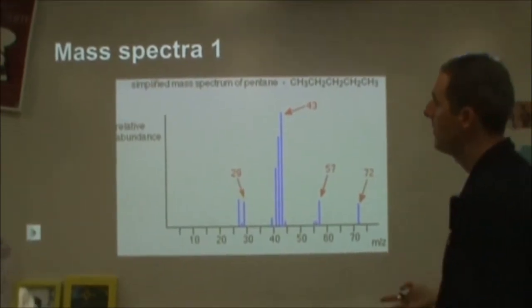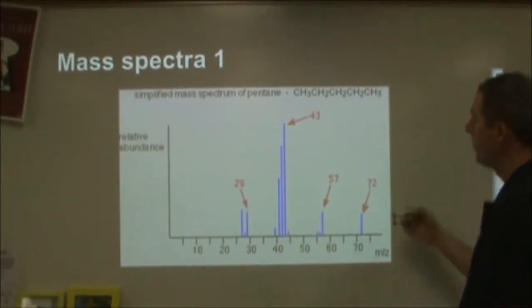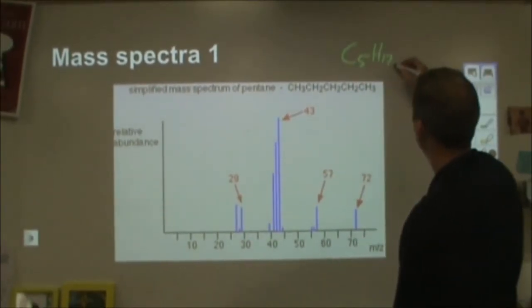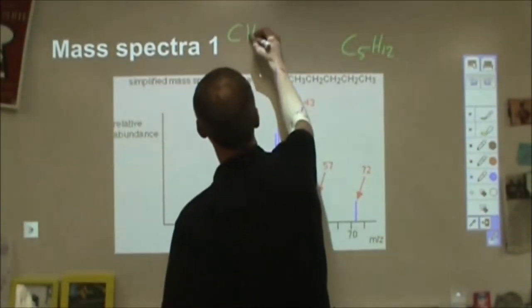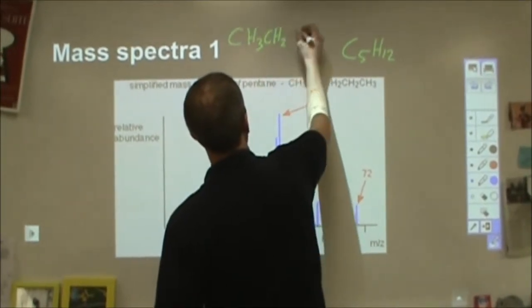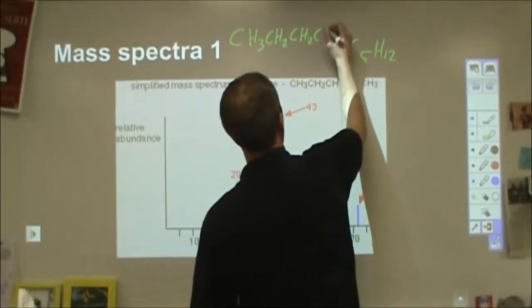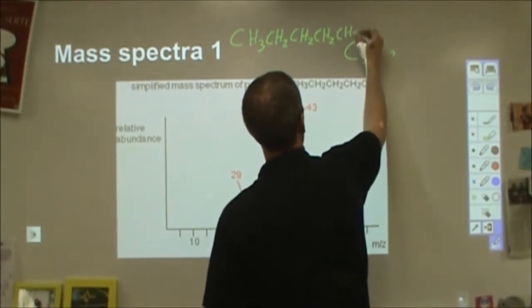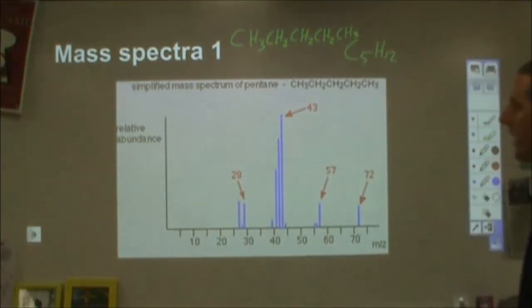So this is a mass spectra for pentane, which is C5H12, which is straight-chained alkane. So we have CH3, CH2, CH2, CH2, CH3.